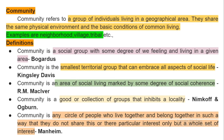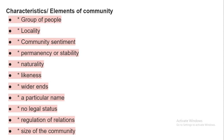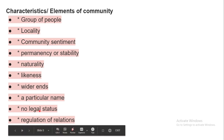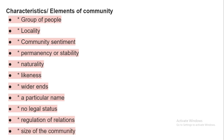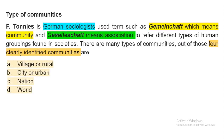Now, the characteristics or elements of community: a group of people, a common locality, community sentiments, permanency or stability, naturality, likeness, a particular name, no legal status, regulation of relationships, and a certain size. Every community has these defining features.